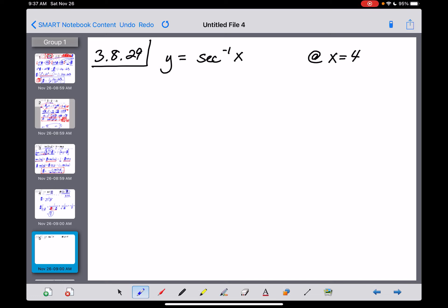Number 29 is asking us to take the derivative of y equals inverse secant of x and then evaluate that derivative at x equals 4. This is already in a really good form to just get started, so let's dive in.